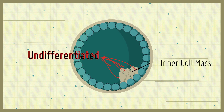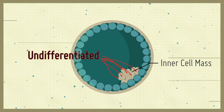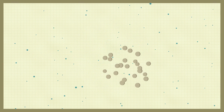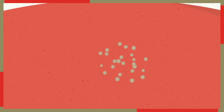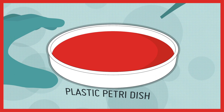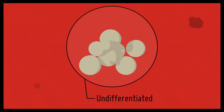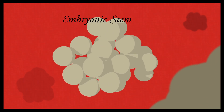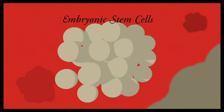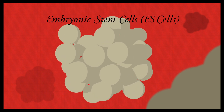If the cells of the inner cell mass are isolated, they can grow indefinitely in a plastic dish and maintain this undifferentiated state. These cells are known as embryonic stem cells, or ES cells.